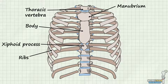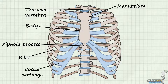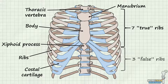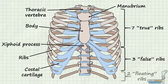The ribs connect to the sternum via the costal cartilage, which is partially deformable connective tissue that allows the chest wall to move a little. The first seven ribs connect directly to the sternum via their costal cartilage and are thus known as true ribs. The eighth, ninth, and tenth ribs connect indirectly by connecting to the costal cartilage from the layer above and are thus known as false ribs. The eleventh and twelfth ribs do not connect to the sternum at all, earning them the name floating ribs.